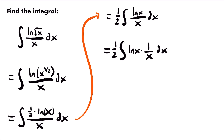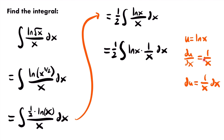This time u-substitution is going to work. We set u equal to the natural log of x, so du/dx equals one divided by x, which means du equals one divided by x, dx. We can confirm that one divided by x, dx appears in our integral. We replace the natural log of x with u and one divided by x, dx with du, leaving us with one-half times the integral of u, du.